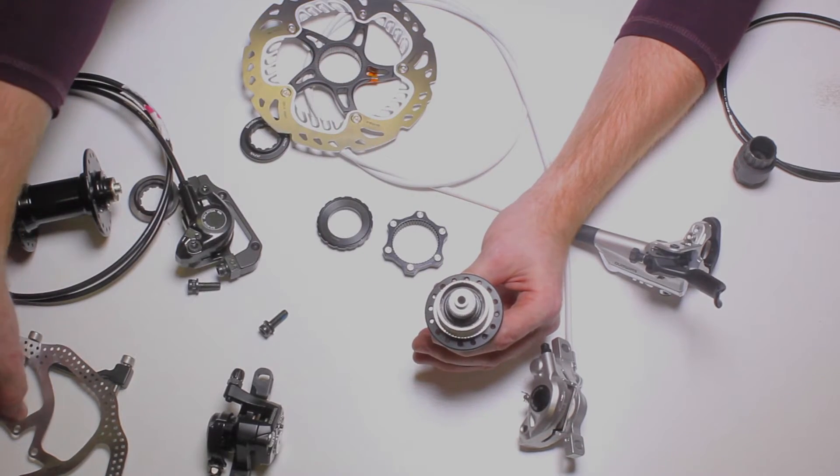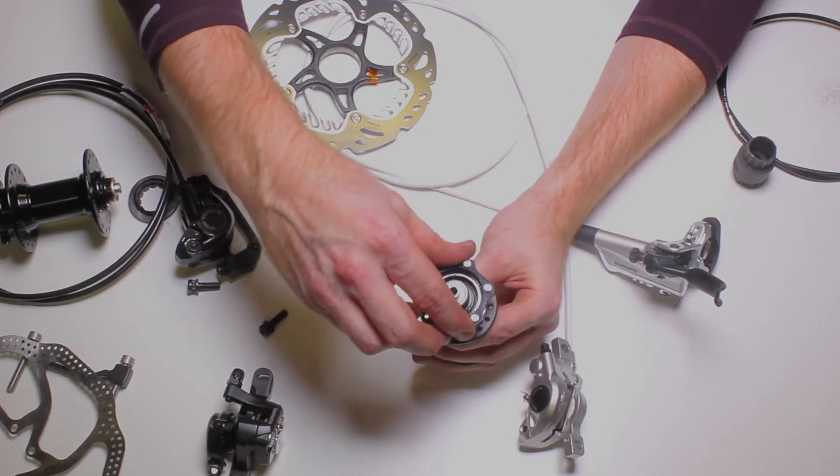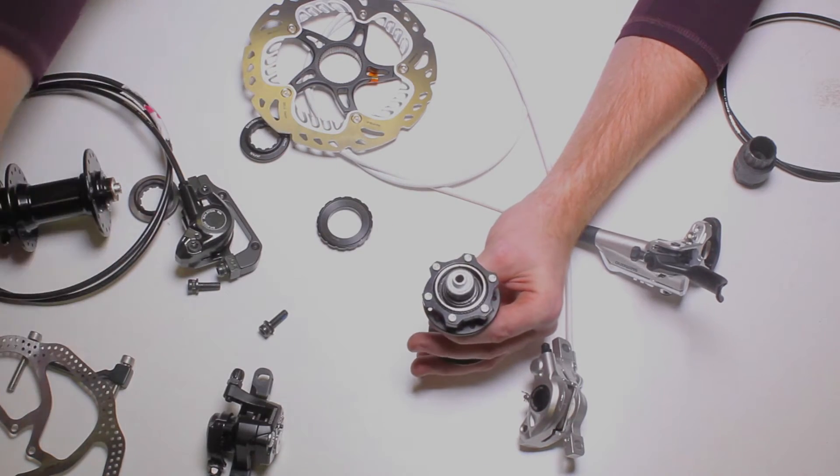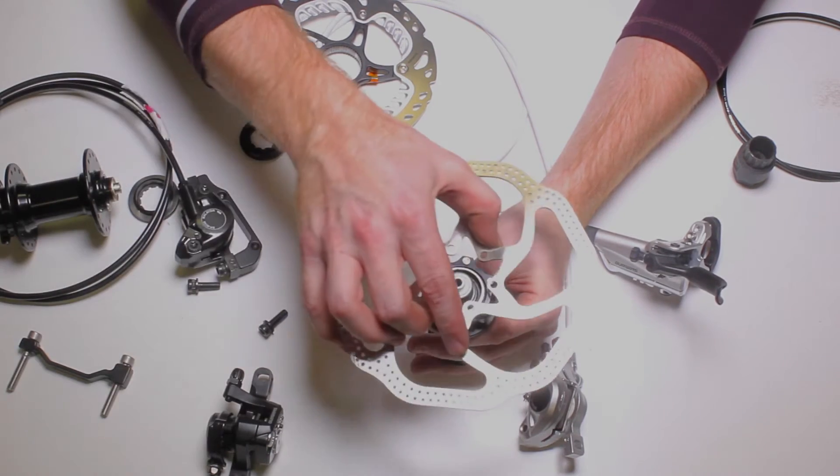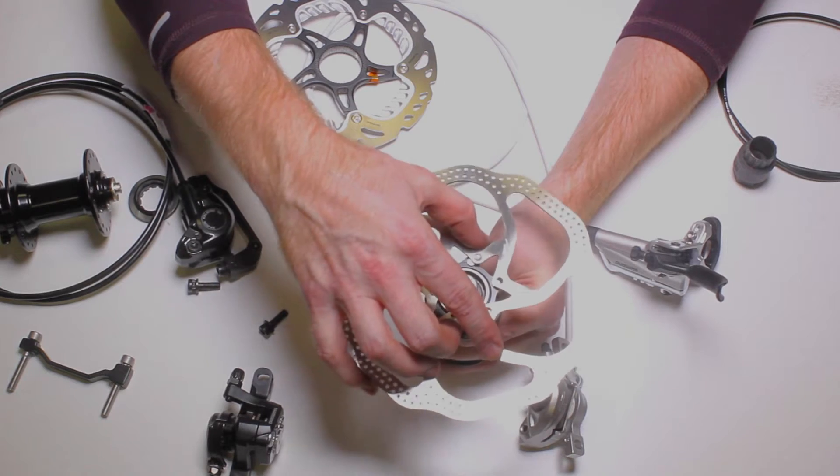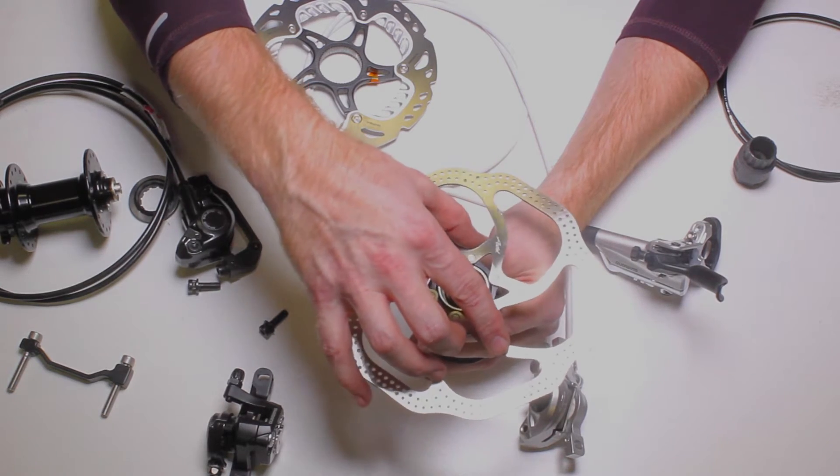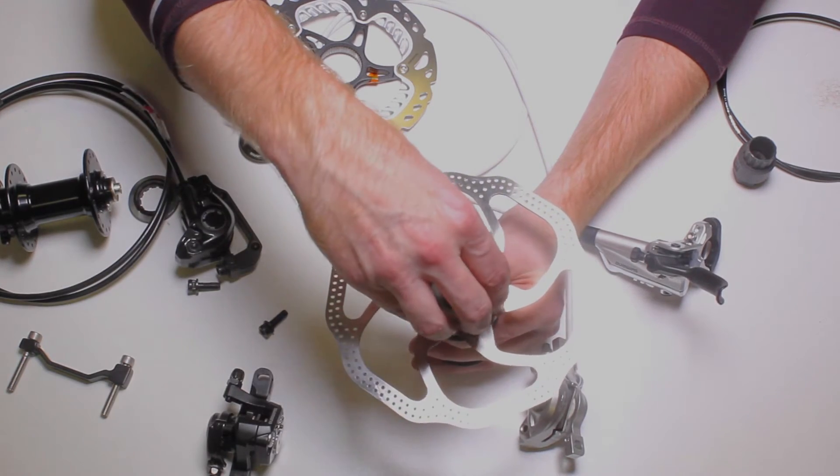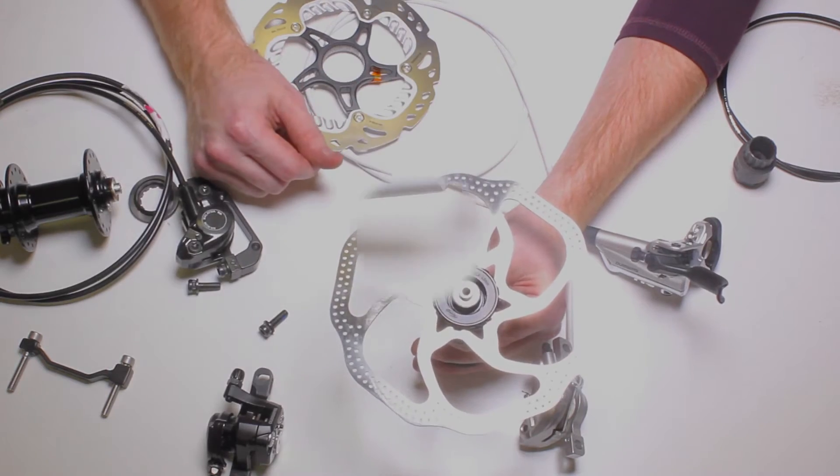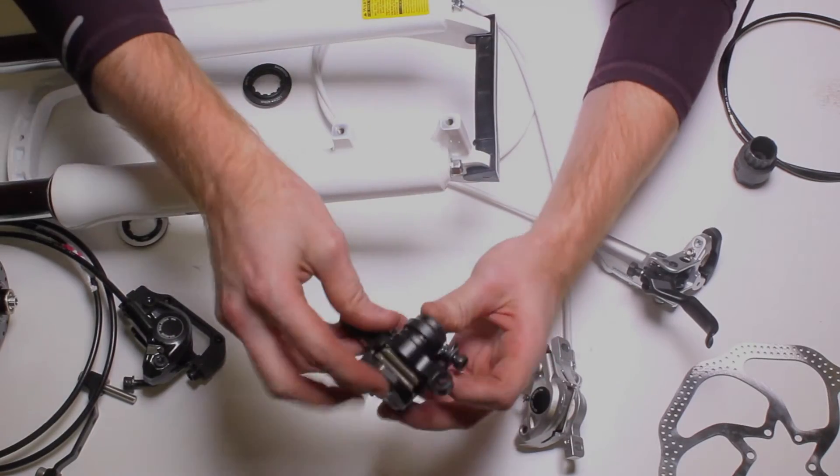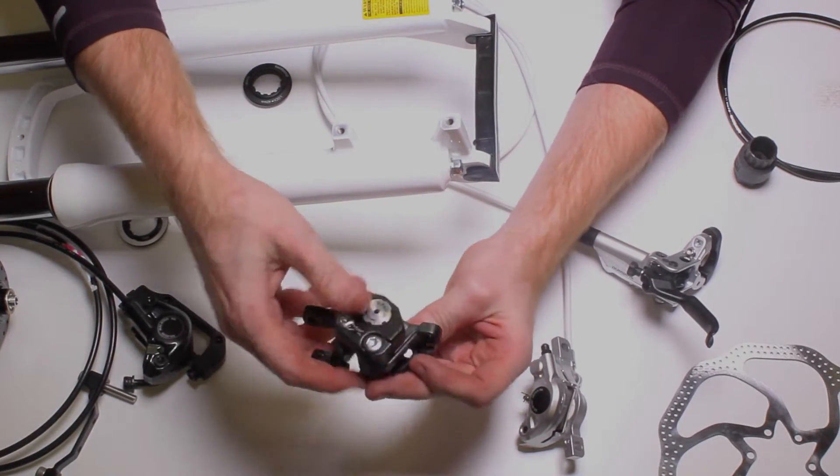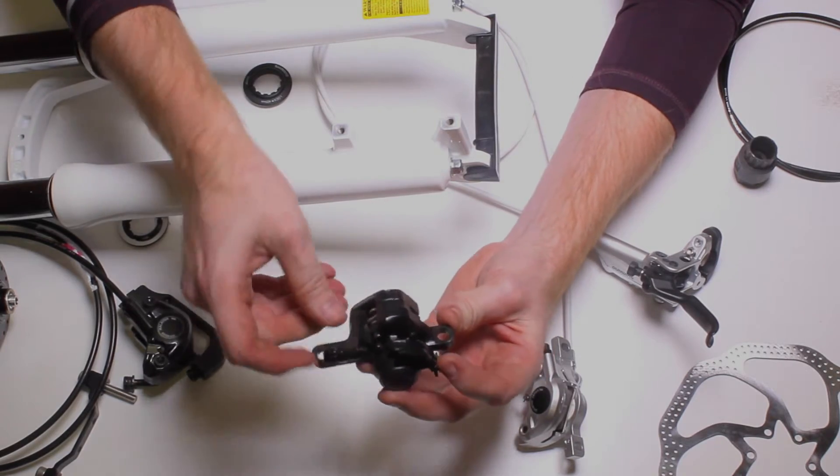And I can run with an adapter. This happens to be center lock to six bolt adapter. It goes like that. And the lock ring holds it in place. So now I converted this into six bolt. Now that rotor compatibility is out of the way, we're going to talk about caliper compatibility.